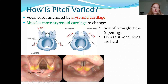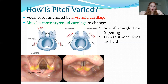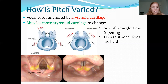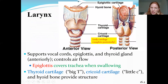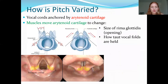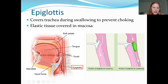The arytenoid cartilages are pyramid-shaped structures with ligaments and muscles attached. These muscles can tighten and pull on the vocal cords and change their angle to produce different types of sounds. The corniculate cartilages are the very tips of the arytenoid cartilages — in anatomical diagrams this pyramid structure is the arytenoid cartilage, and the small tip at the edge is the corniculate cartilage, which can be a little tricky to identify.